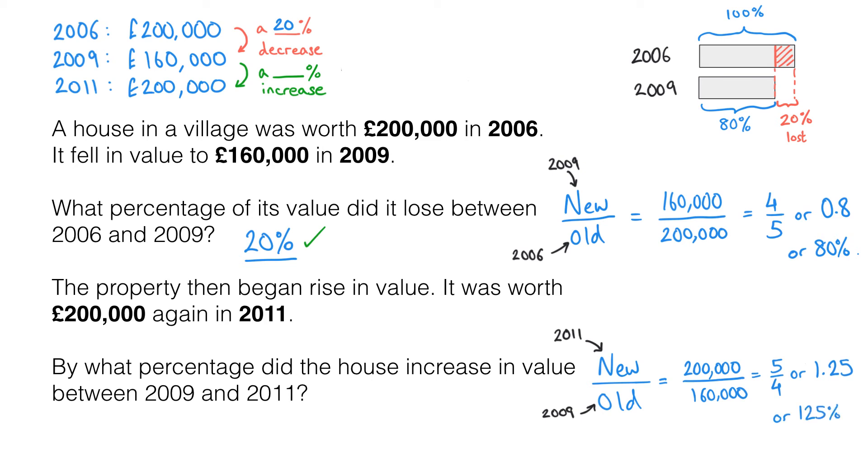So what we're saying is the new value is 125% of the old value. That's not the final answer to this question. If the new value is 125% of the old value that means the old value must have gone up by 25%.